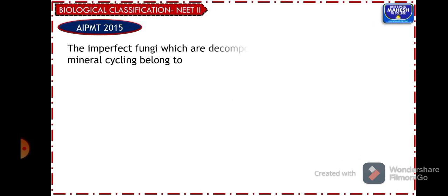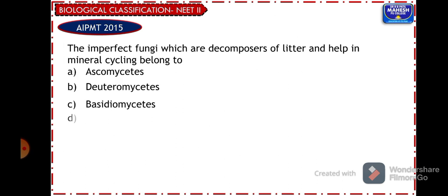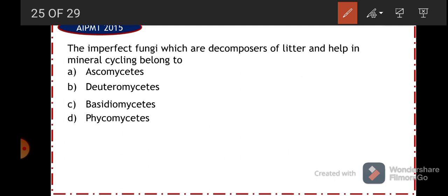From AIPMT 2015: the imperfect fungi which are decomposers of litter and help in mineral cycling belong to which group? Deuteromycetes are called imperfect fungi because they do not show sexual reproduction, or sexual reproduction has not yet been discovered in this group. So the answer is option B, deuteromycetes.